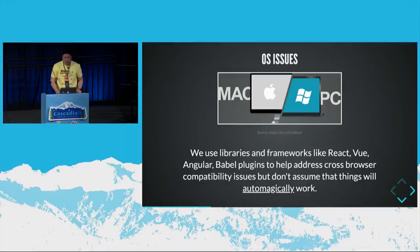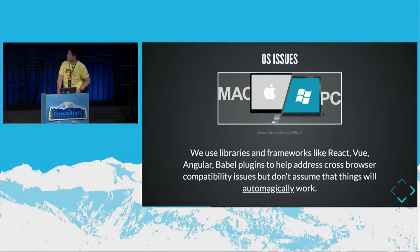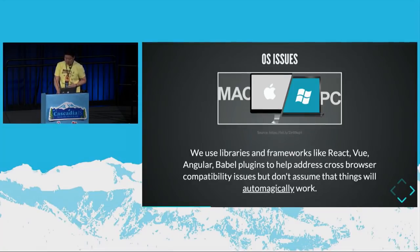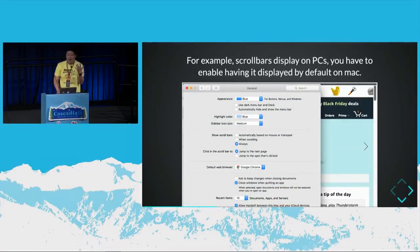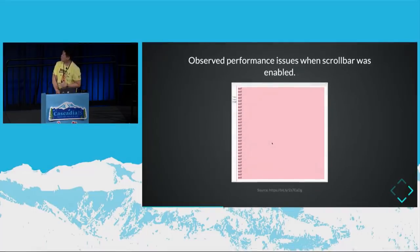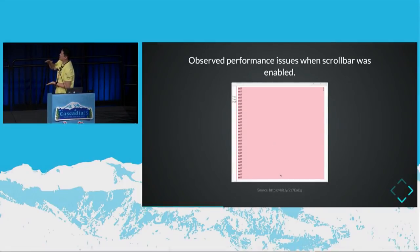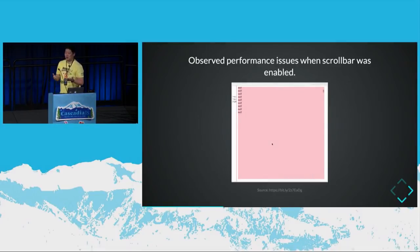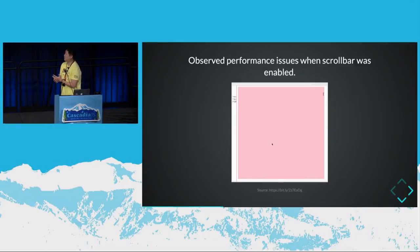The other thing was operating system issues — Mac versus PC. We use libraries and frameworks like React, Vue, Ember, Angular, and Babel plugins to help address cross-browser compatibility. A prime example: we didn't know scroll bars display on PCs because we're all on Macs. We had to manually enable displaying scroll bars by default on Mac. And with a virtualized scroll, that one-pixel deviation was actually causing performance issues — the virtualized list just kept moving up and down — and all the people on the business side with PCs were complaining.